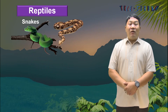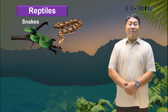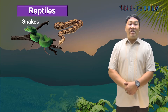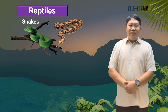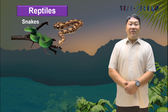Snakes are reptiles without legs. Their long body is covered with scales. They do not have ears and only sense vibrations on the surface. They can swallow prey that is larger than their mouth because their jaws can stretch. Contrary to common belief, only a few snakes are poisonous. However, they can still cause injuries with their fangs and flexible bodies.